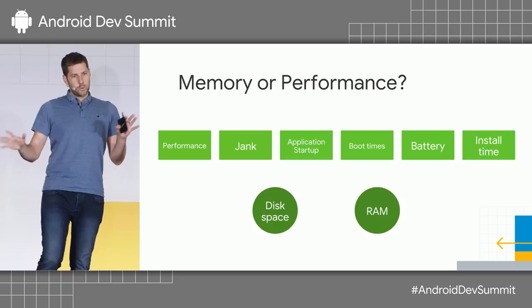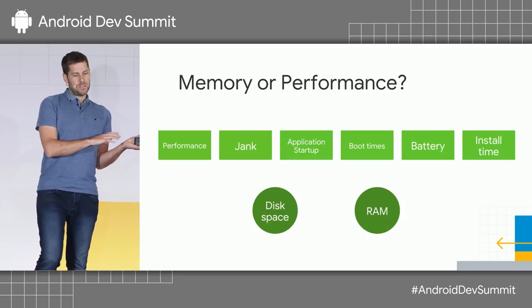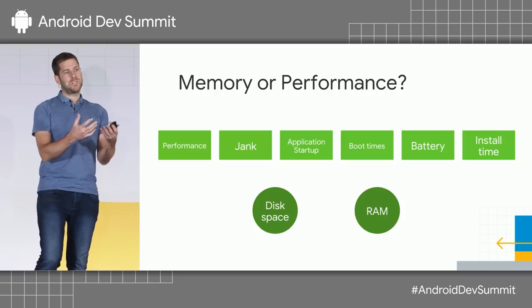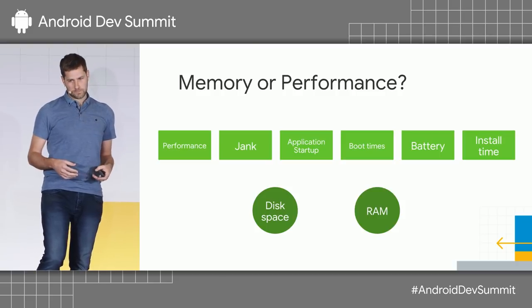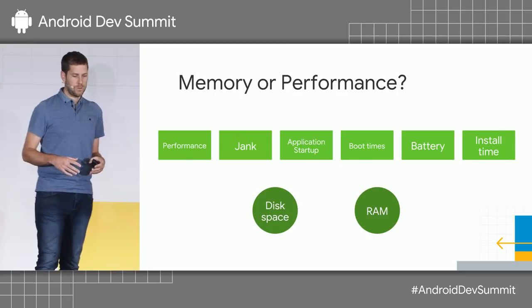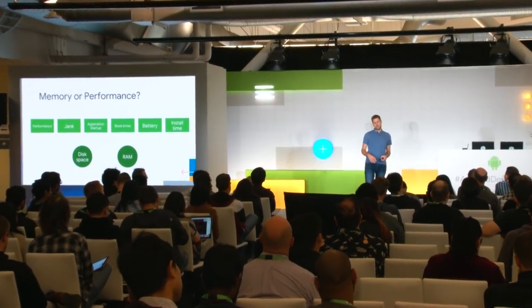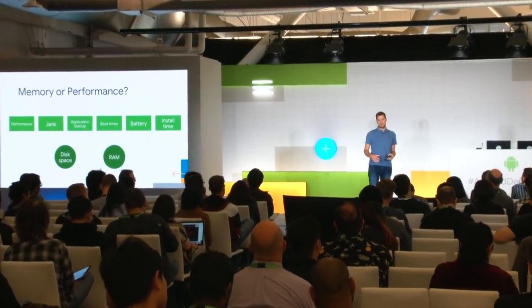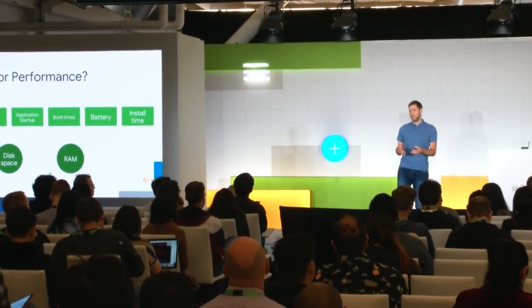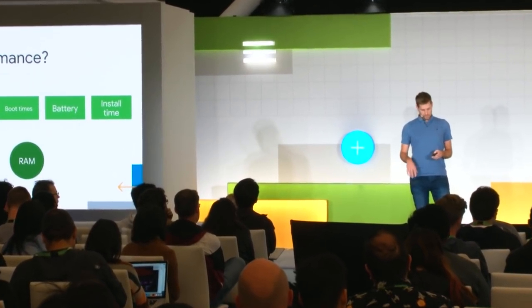The other two, which are memory-related: disk space — how much space is the runtime taking for its own optimizations — and then RAM. Java being Java, there's allocation that the runtime needs to handle, and if it doesn't do it well, then it can take a lot of RAM.